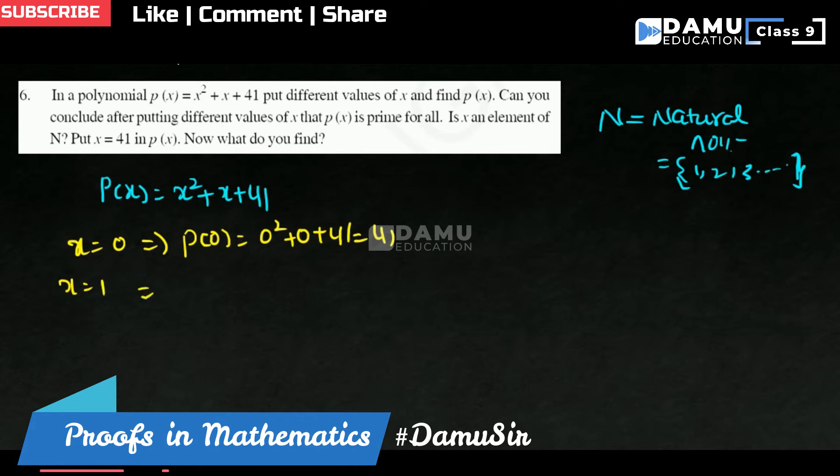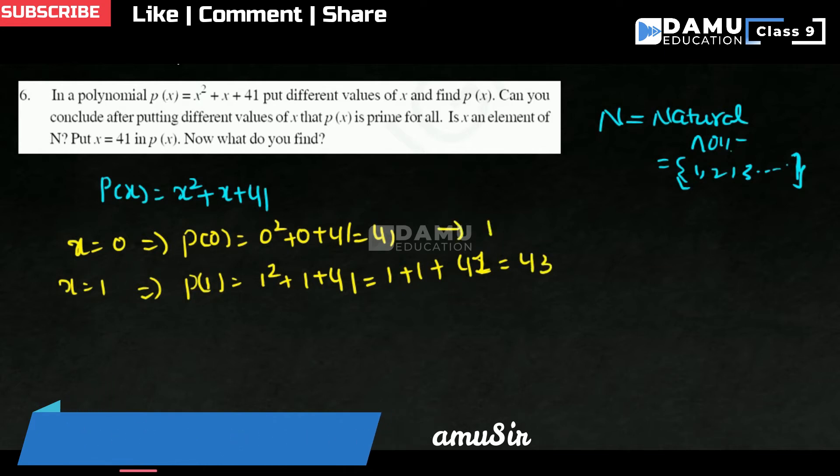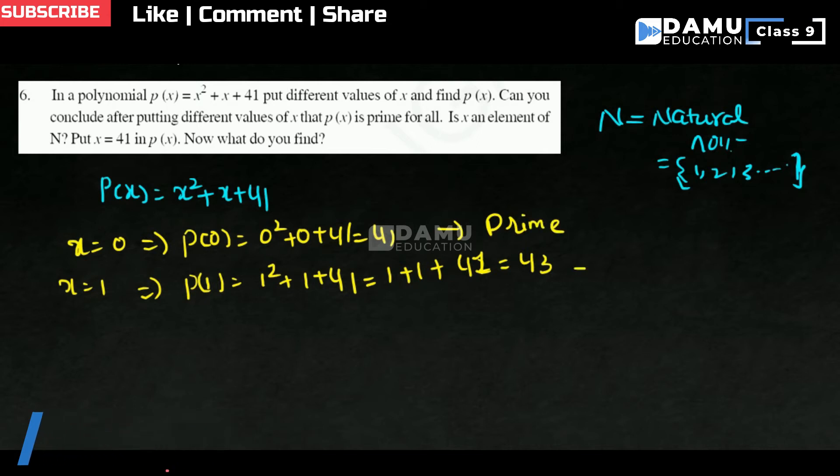If x equals 1, that implies P(1) will be equal to 1 square plus 1 plus 41. So 1 square is 1 plus 1 plus 41, that is 43. This is a prime number. This is also a prime number.